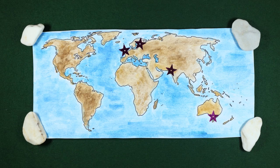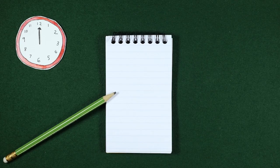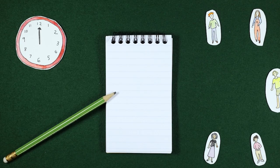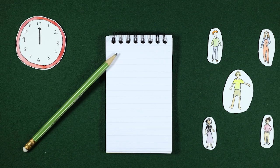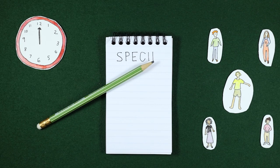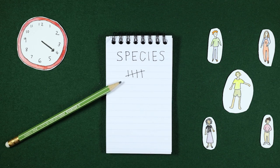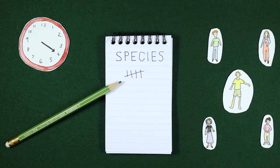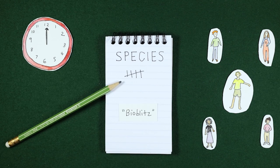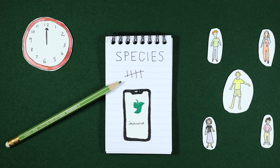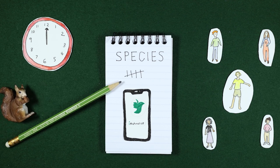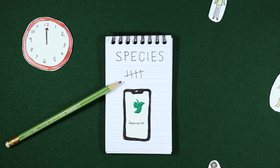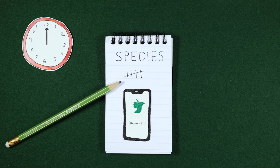In Finland, at the University of Turku, we gathered staff, students and members of the public to record as many species as they could find on campus within 24 hours, in an event known as a BioBlitz. We used the iNaturalist app to help identify species and to keep a record which can be assessed by others in the future.